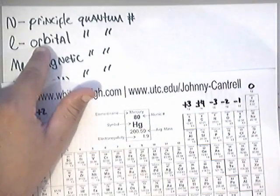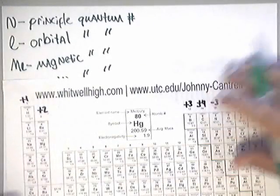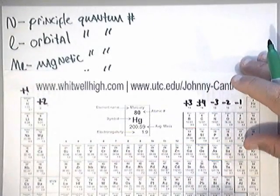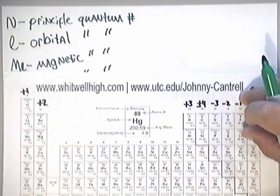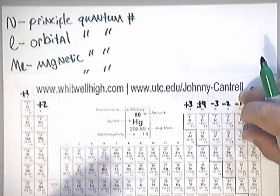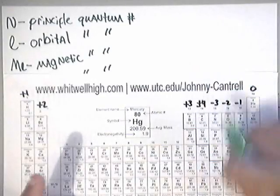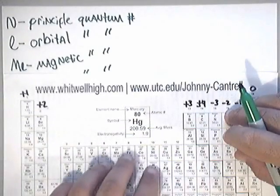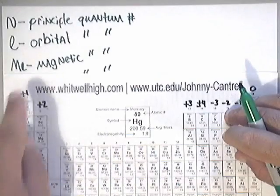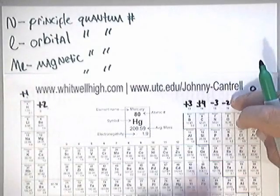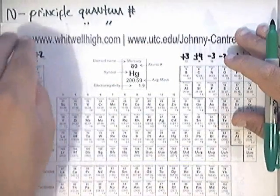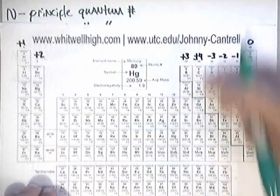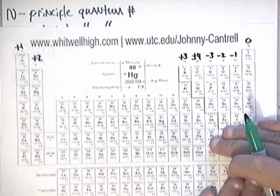And if you were looking at a P orbital, a P orbital would have a value of 1. And a D orbital would have a value of 0, 1, 2. And F orbitals will have a value of 0, 1, 2, and finally, 3.